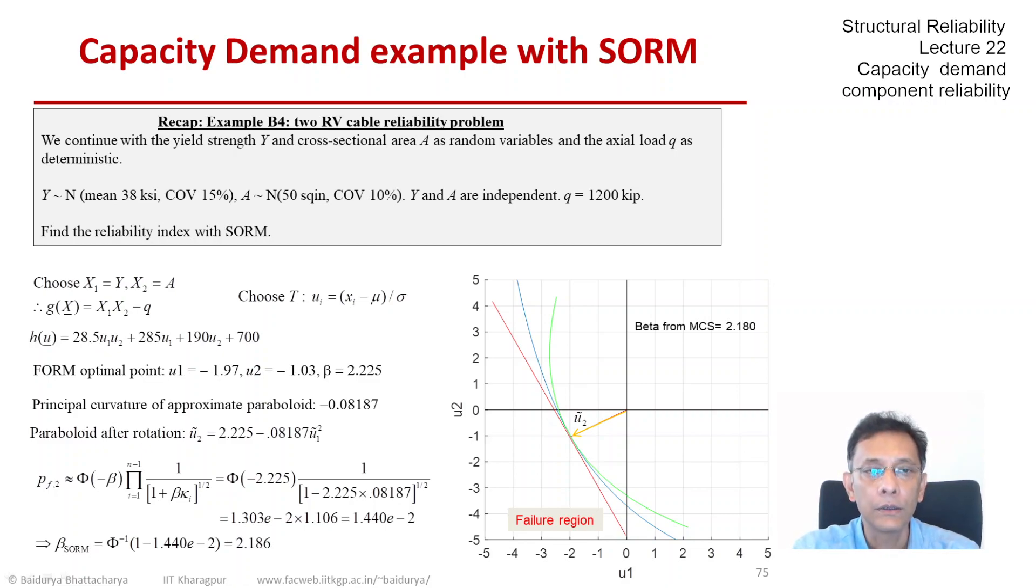Much closer to the true value obtained from MCS. Now just one point to note is that SORM in this case still overestimates reliability very slightly. So that green curvature does not really mean that we are including the entire probability content in that green region, the failure region demarcated by the green line, because there were already approximations involved in computing that PF.